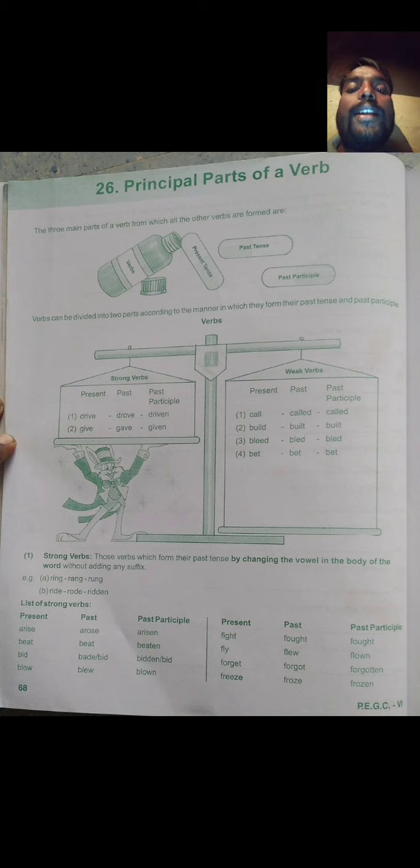Let us know the example for strong verbs. First one, in present tense, drive, past tense, drove. Third one, past participle, driven. We have second example here: give, gave, given.